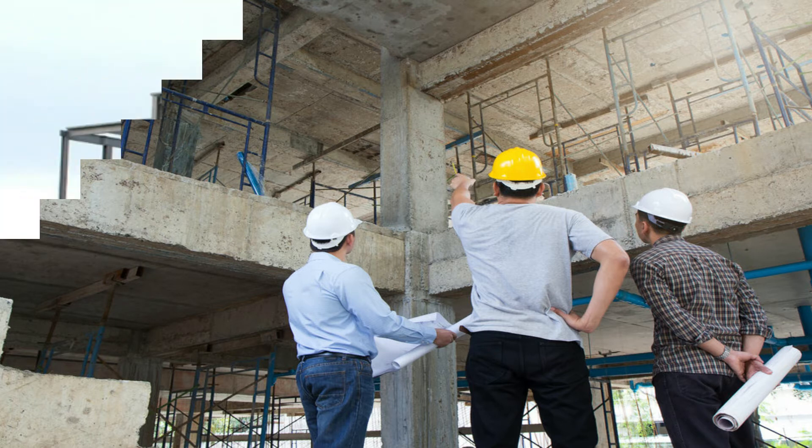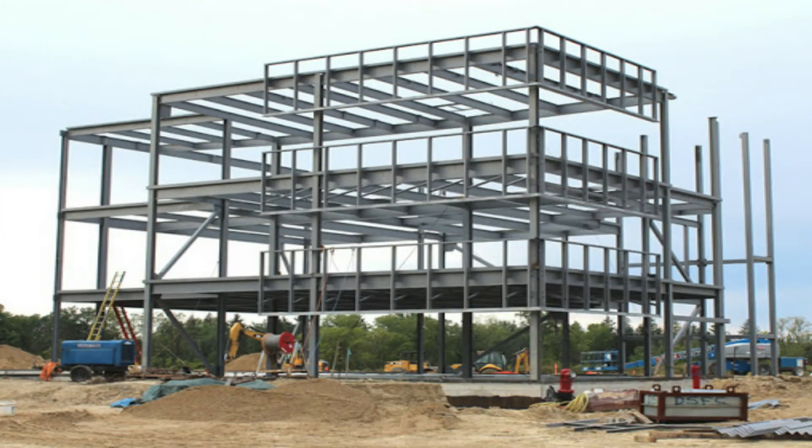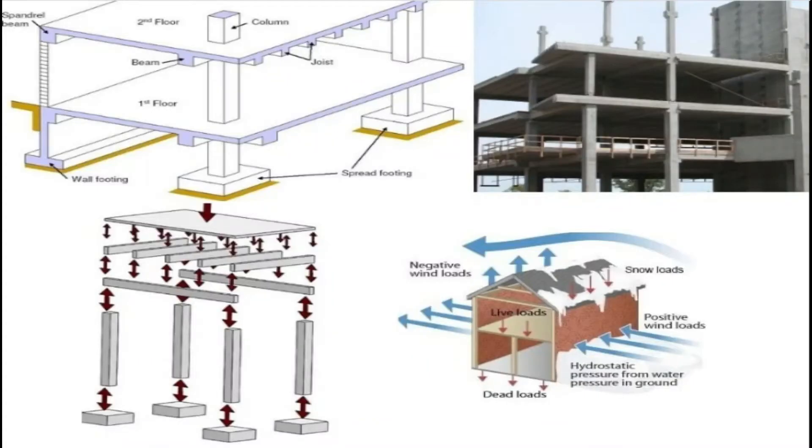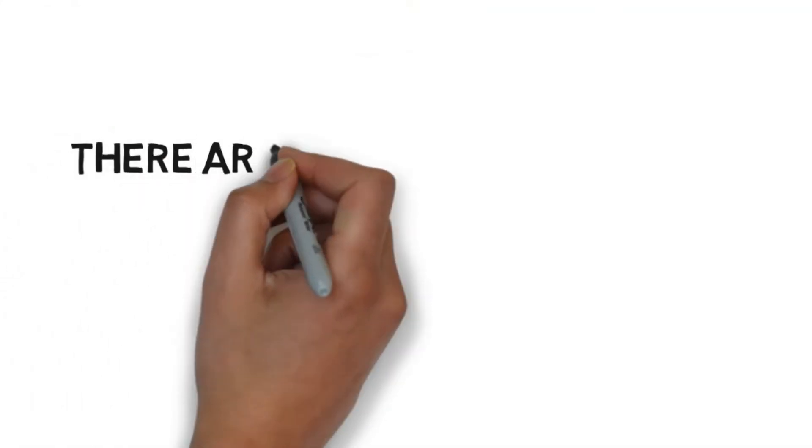The load path can be identified by considering the elements in the building that contribute to resisting the load and by observing how they transmit the load to the next element. Depending on the type of load to be transferred, there are two basic load paths.